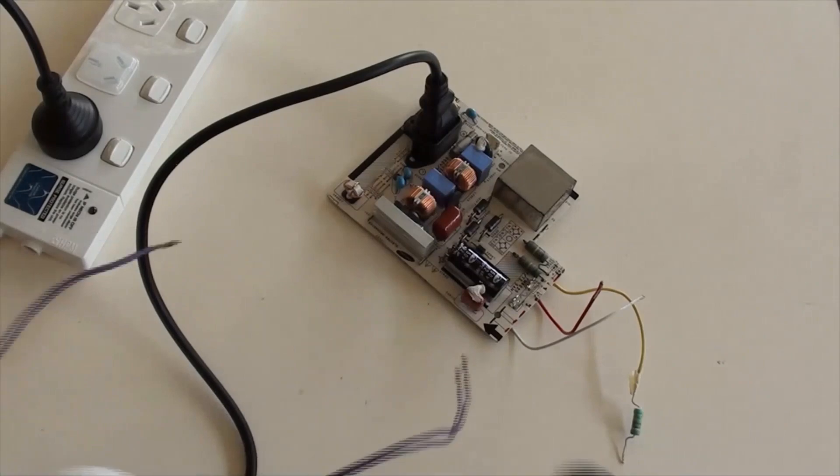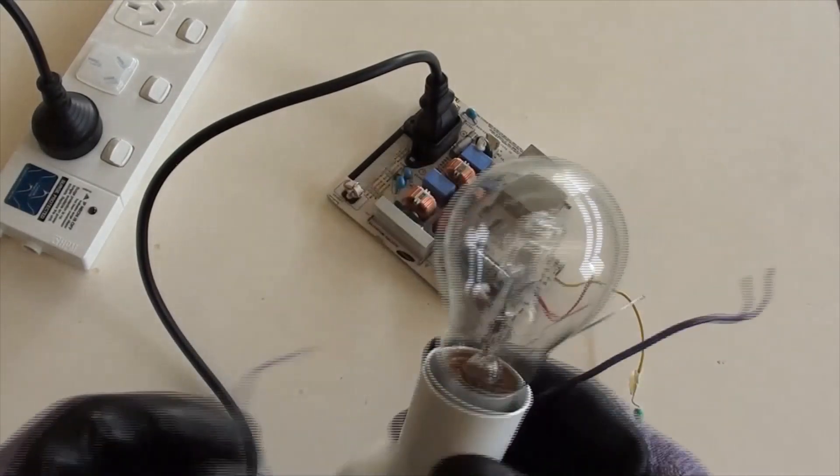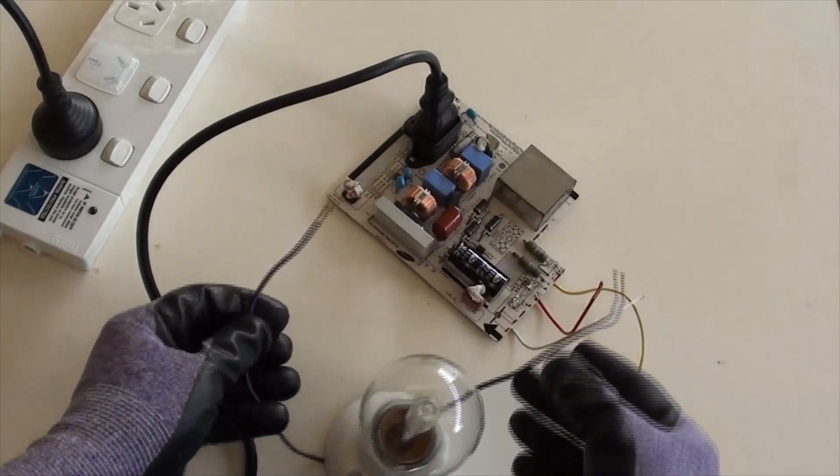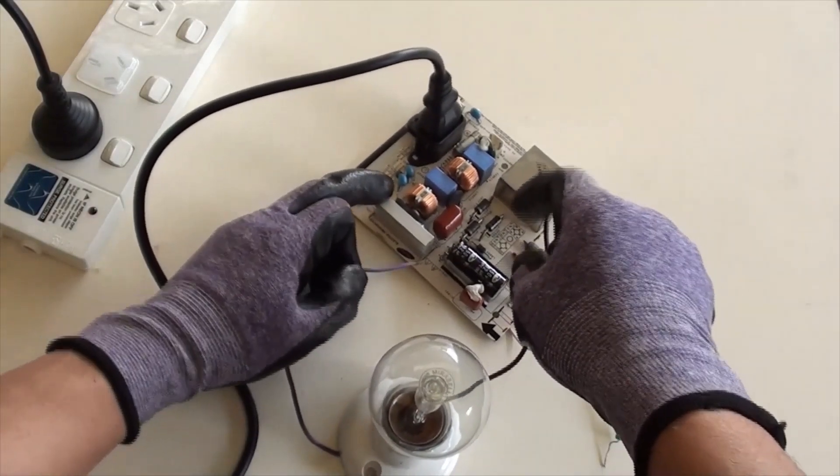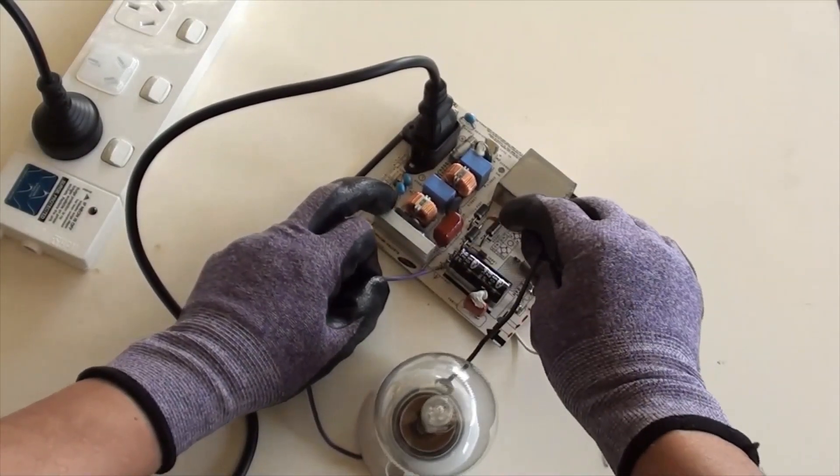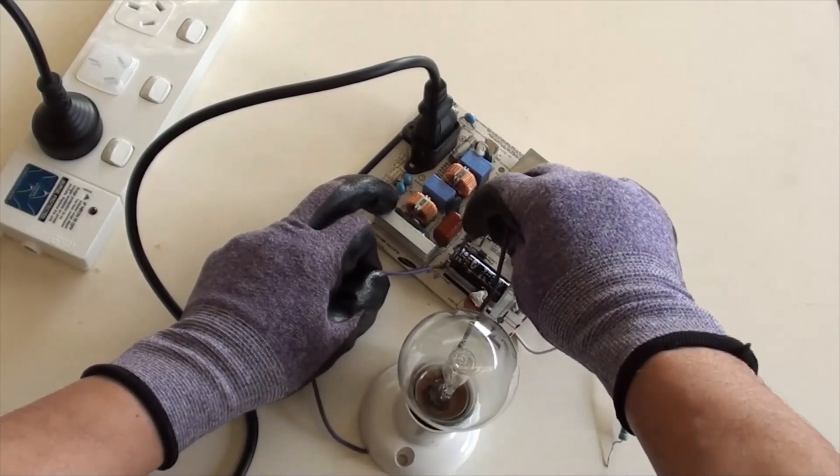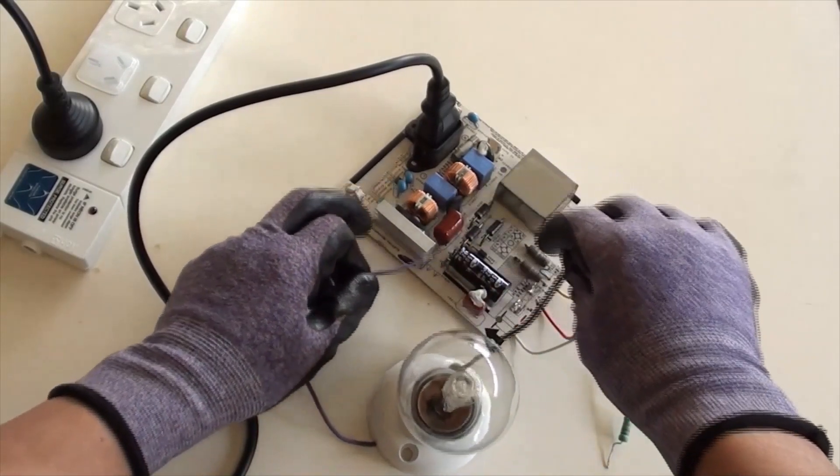Discharging the capacitor must be done before working on the circuit board, and by using a bulb to do the showing. That's it.